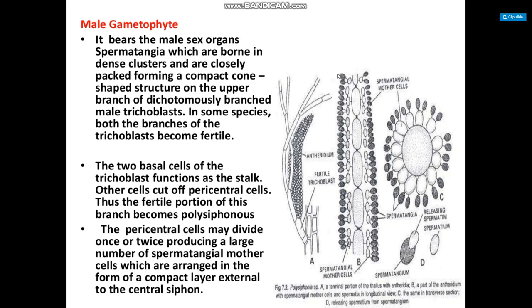In some species, both branches of the trichoblast become fertile, and the two basal cells of the trichoblast function as the stalk, while other cells cut off pericentral cells. Thus, the fertile portion of these branches becomes polysiphonous, and the pericentral cells may divide once or twice, producing a large number of spermatangial mother cells arranged in a compact layer external to the central siphon.